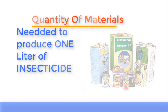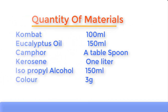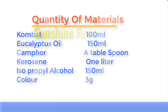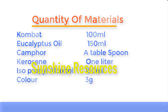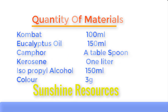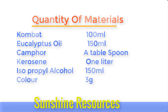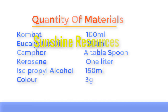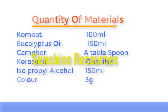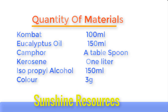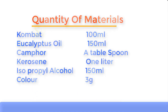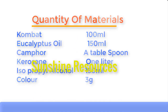Now let's establish the quantity of materials needed to produce one liter of insecticide: compact 100 ml, eucalyptus oil 150 ml, camphor one tablespoon, kerosene one liter, isopropyl alcohol (IPA) 150 ml, and color three grams.